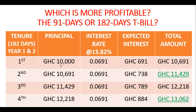Going through the same process: the opening principal is 10,000, and at the rate of return of 0.0691 the profit over the first 182-day period is 691. Adding that to the principal gives 10,691. That's six months. We reinvest this new principal for the second period of the first year and earn interest of 738. Adding it to 10,691 gives us 11,429 for the first year of the 182-day tenure.